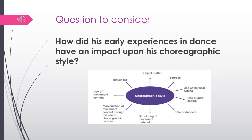I'd like you to come back to the different Bourne works we looked at at the start and think about why his choreographic style is the way it is. Please pause the video and do a little bit of research looking at different Bourne works, thinking about how his early experiences in dance had an impact upon his choreographic style. You might think about the subject matter, sources, use of physical setting, aural setting — all of the things on the mind map. Have a think about that and make some notes.